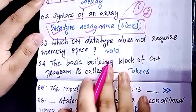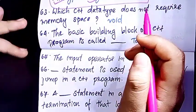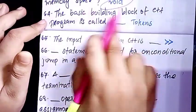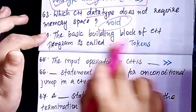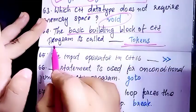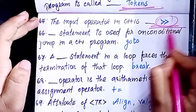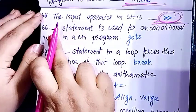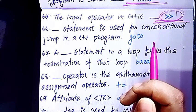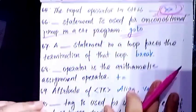Which C++ data type does not require memory space? The basic building block of a C++ program is called a token. The input operator in C++ is the extraction operator. The dash statement used for unconditional jump in C++ is the goto statement.